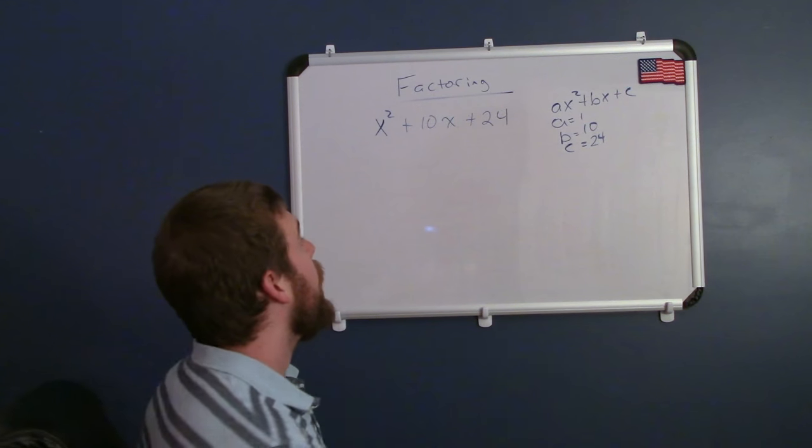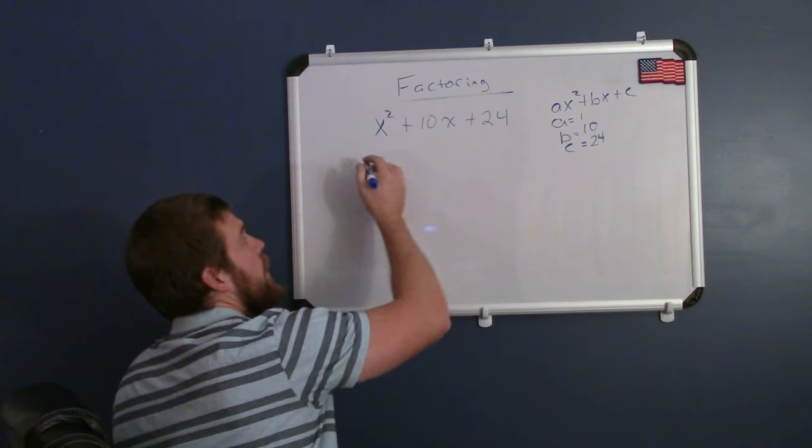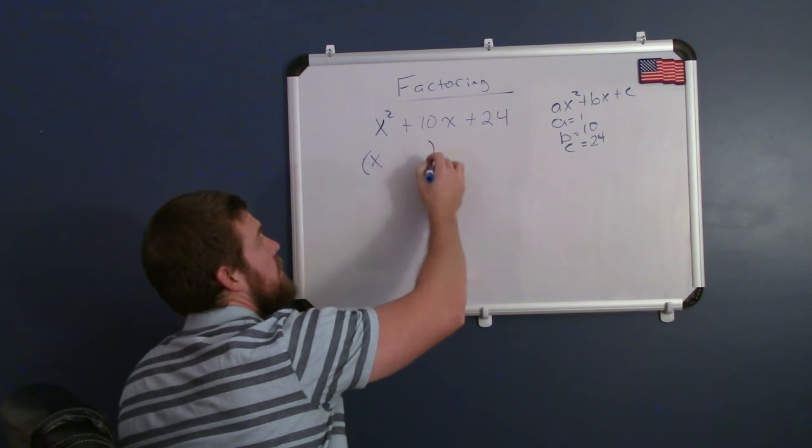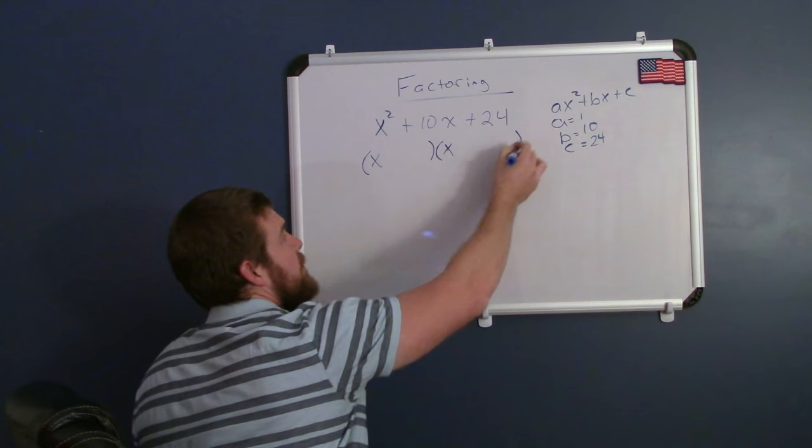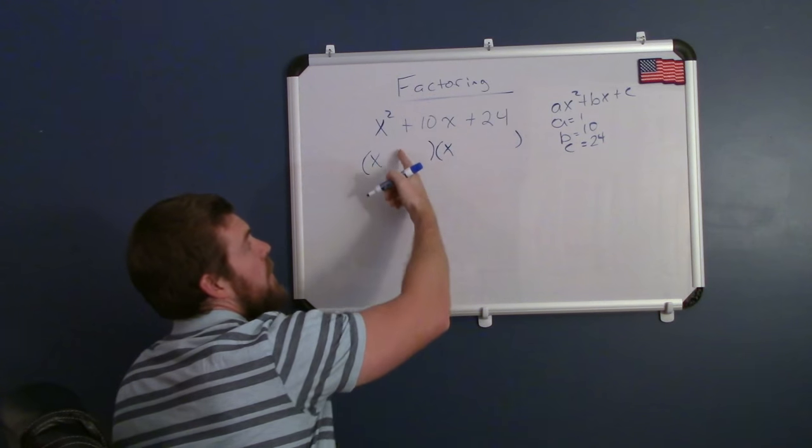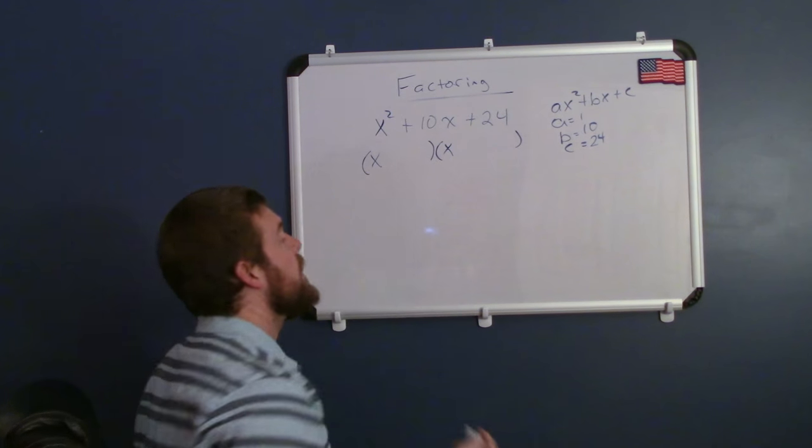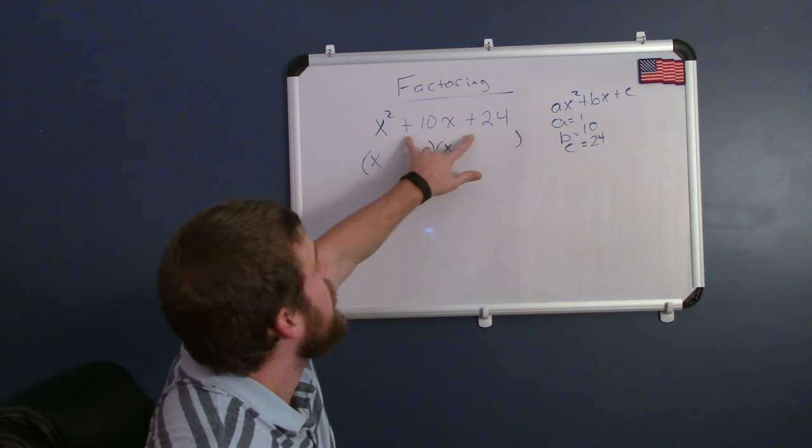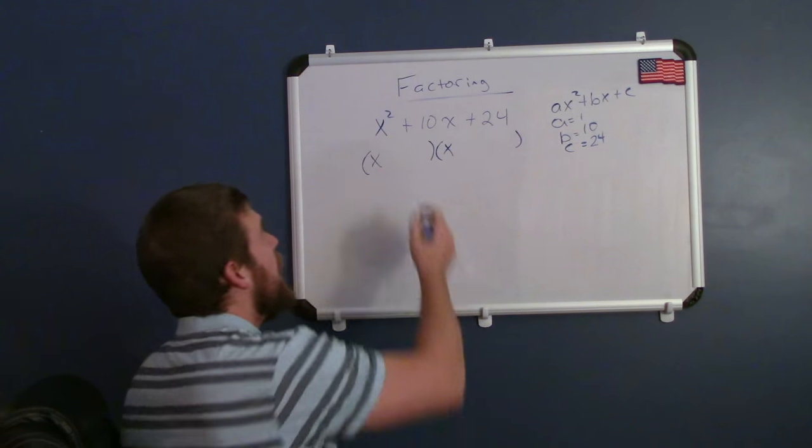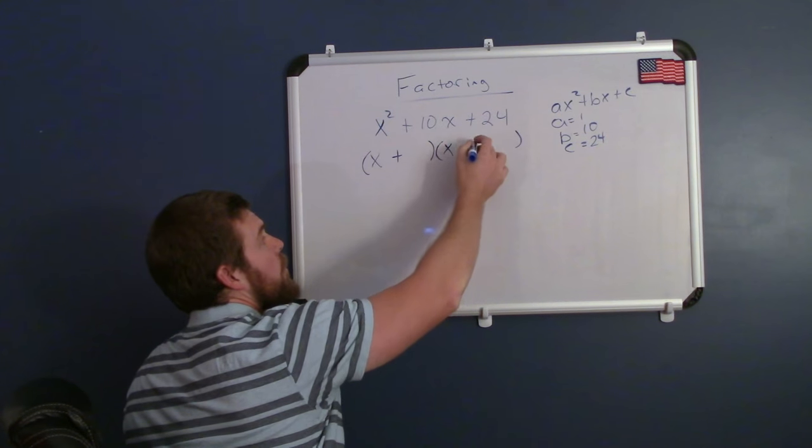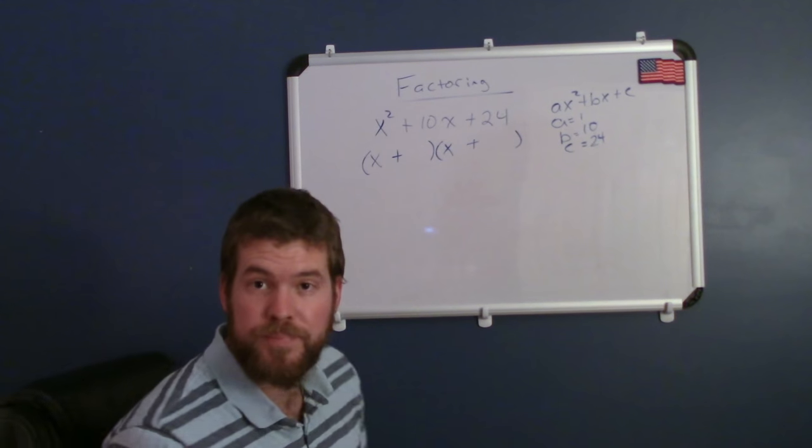We want this whole thing to break up to be some x times some x with some parentheses, and we're going to have a plus or minus right here. Now since this has both plus signs right there on both parts, I can be assured that both of these will be plus as well.